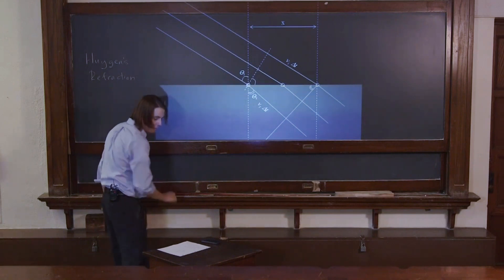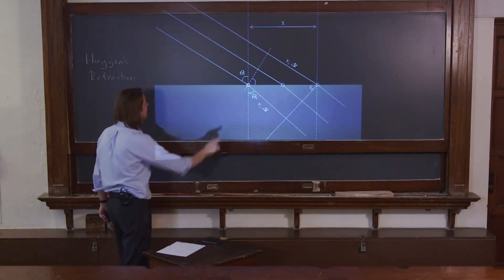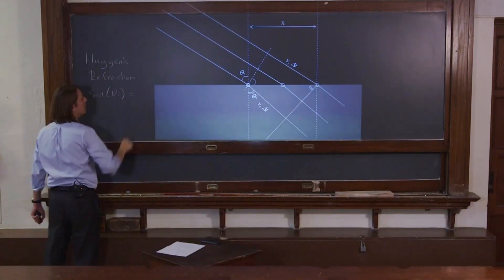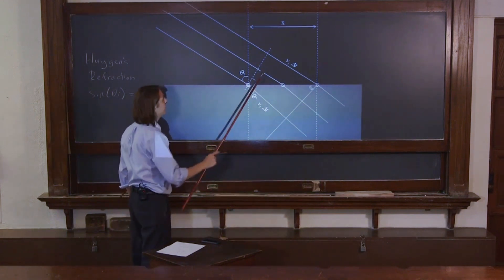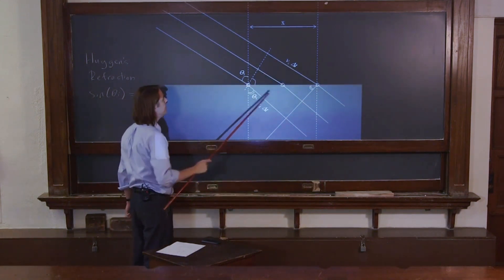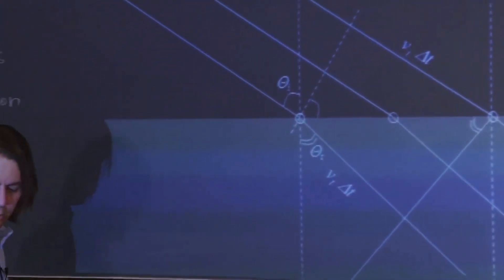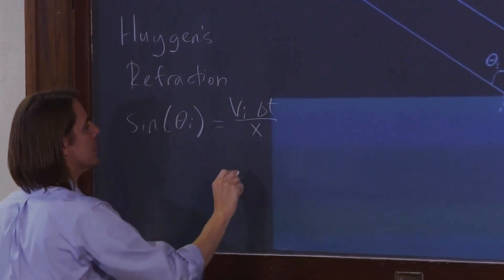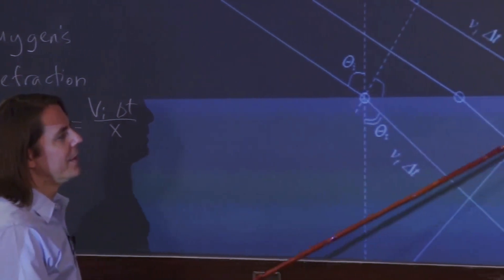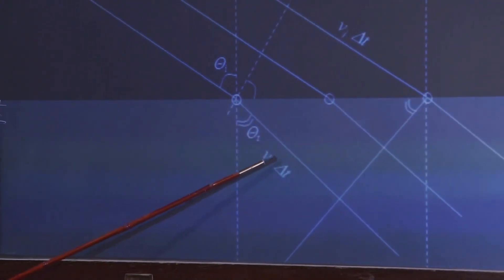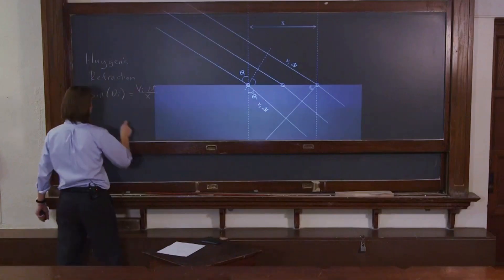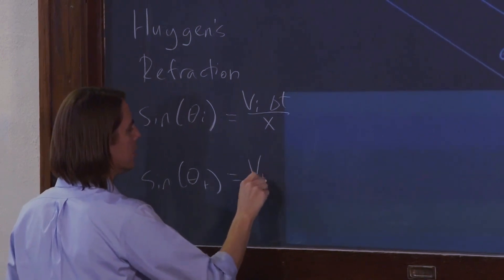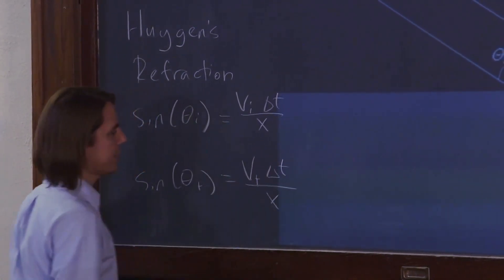We want to take the sine of that theta I and see what it is, sine opposite over hypotenuse, so the opposite is VI delta T over the hypotenuse, which for some reason this time we're calling X instead of L. And we want to look at theta T. The sine of that angle also is opposite VT delta T over X, all right?